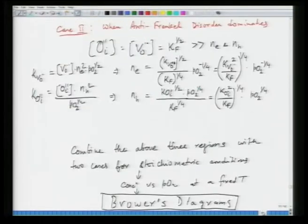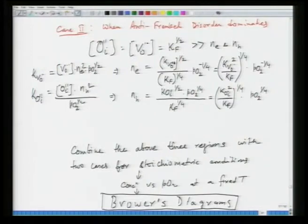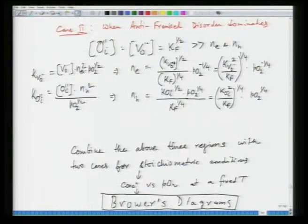The second scenario is when anti-Frenkel defects dominate. In that case, vacancy of oxygen equals oxygen interstitial equals K_F to the power half, and these two are much larger than electron and hole concentration. We work out from the reduction and oxidation reactions the electron and hole concentrations. Because V_O and O_I are now fixed as K_F to the power half, we replace these values in the expressions, and find that electron and hole concentrations go as P to the power minus 1/4 or plus 1/4.